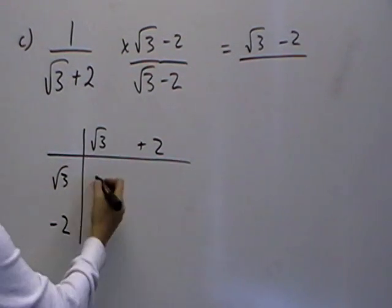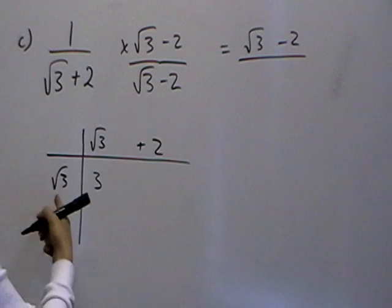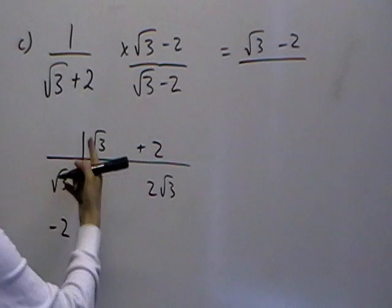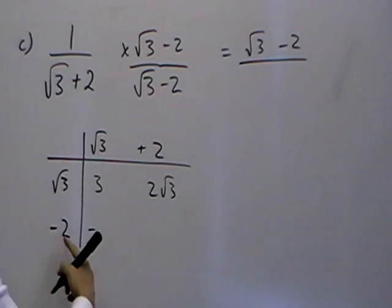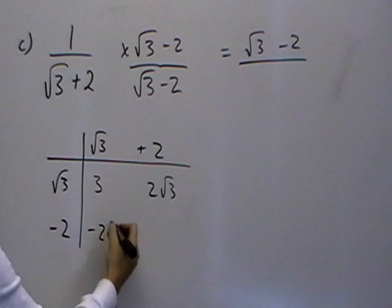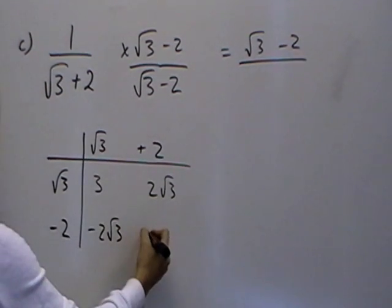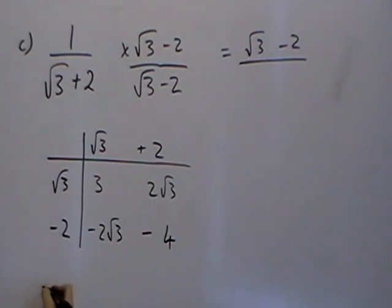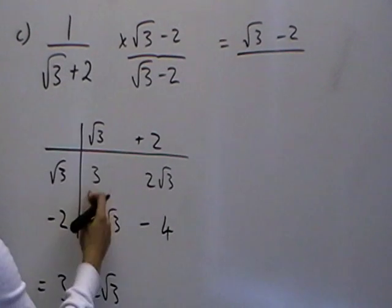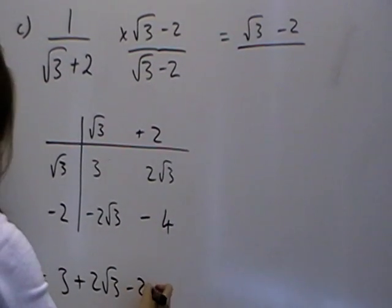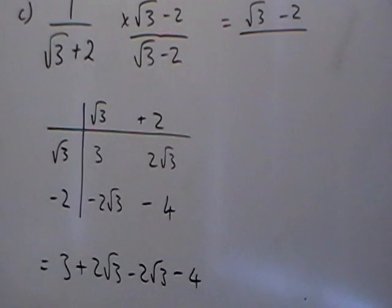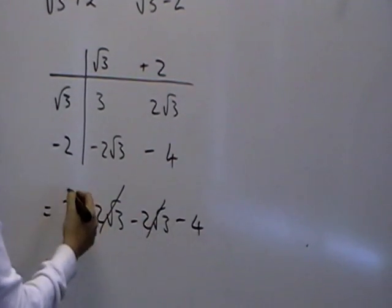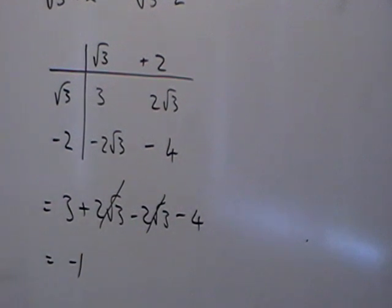Root 3 times by itself is 3. Here we've got 2 lots of root 3. We've got 2 lots of root 3 here. We've got a negative times a positive which is negative, and 2 times 2 is 4. So we've got 3 plus 2 root 3 minus 2 root 3 minus 4. The 2 root 3 subtracts the 2 root 3 to give 0, so we are left with 3 minus 4, which is minus 1.